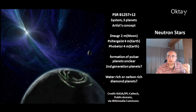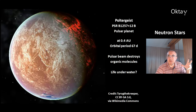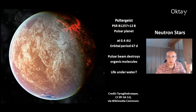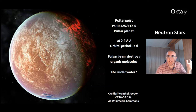There are theories about the composition of these planets — they could be water-rich or carbon-rich diamond planets. This is a picture of how the planet Poltergeist could look: it's at a distance of 0.4 AU from the pulsar, where 1 AU is our Sun's distance, and its orbital period is 67 days. The pulsar beam destroys all organic molecules, so life on the surface is very questionable, but life may exist underwater where it could be protected from the pulsar beam.